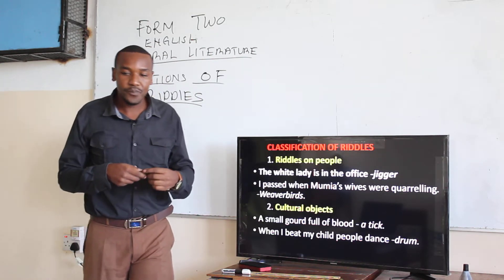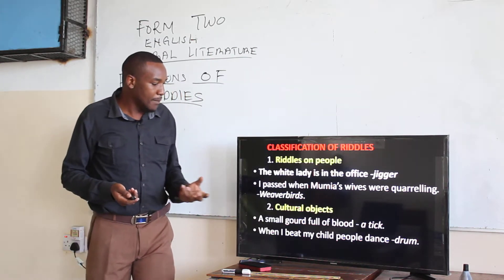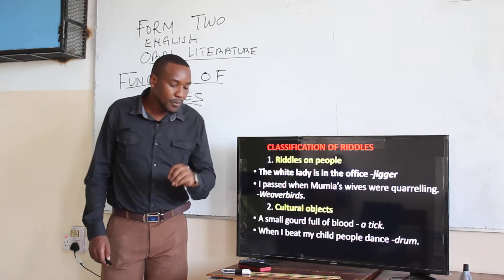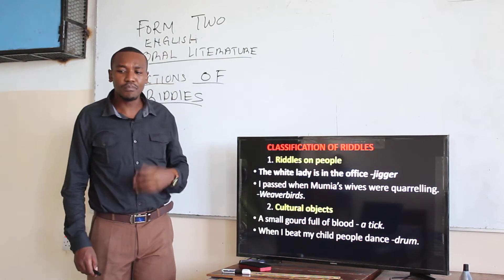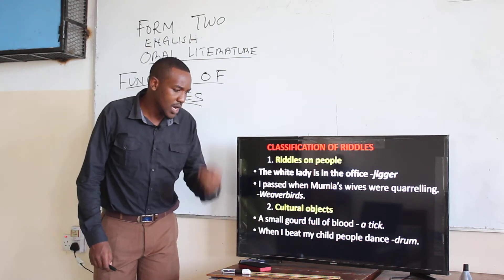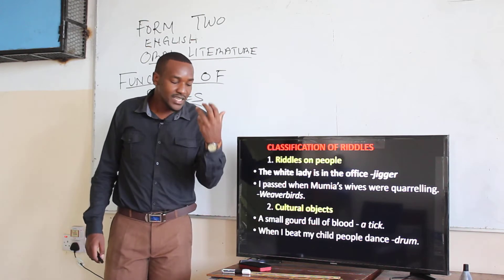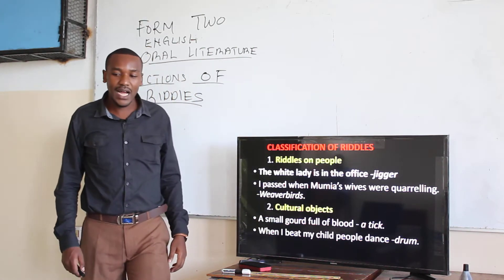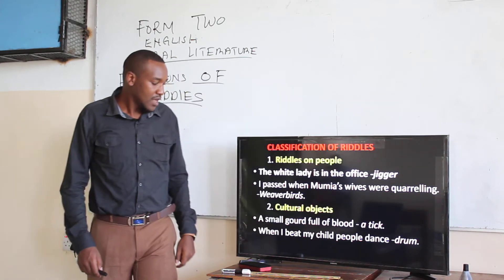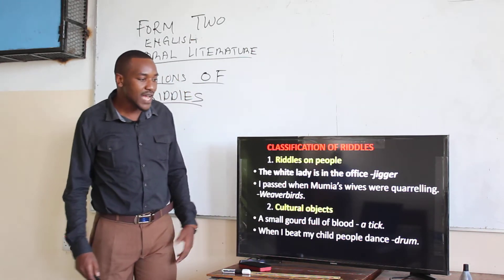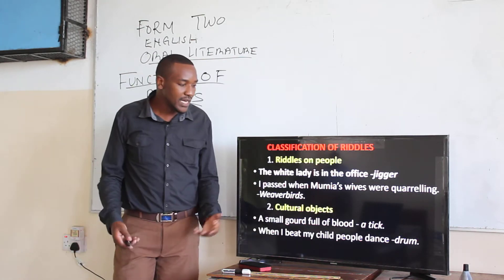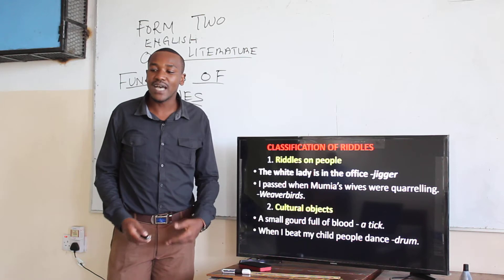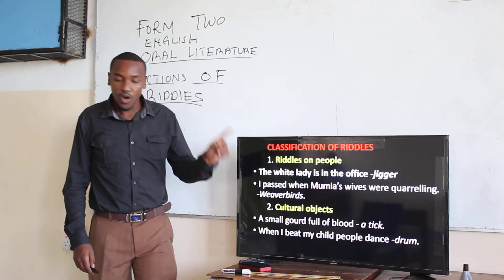Then we have riddles about cultural objects. An example: 'A small gourd full of blood' — remember, a gourd is a cultural artifact — and the answer is a tick. Another example: 'When I beat my child, people dance.' The child being beaten is a drum. So those are riddles about cultural objects.